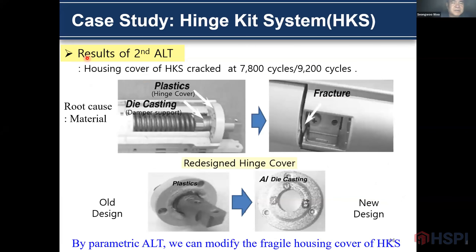This is the result of the second parametric ALT. The housing cover of the hinge kit system cracked at 7,000 and 19,000 cycles. It came from a material problem. When operating the hinge kit system, the damper stroke and damper stop strike the hinge cover, and finally the hinge cover fractures. As an action plan, we modified the material of the hinge cover from plastic to aluminum die casting. By parametric ALT, we can modify the housing cover of the hinge kit system.